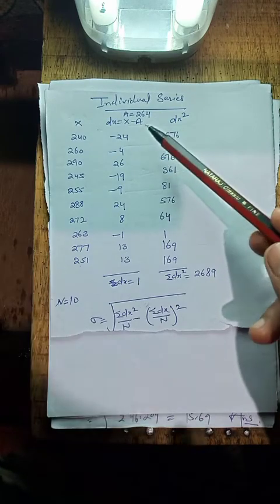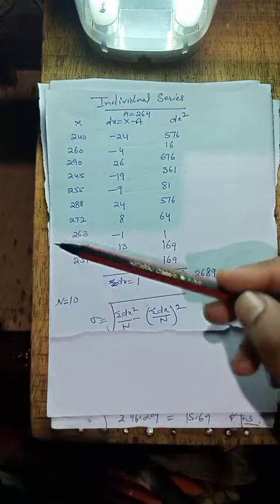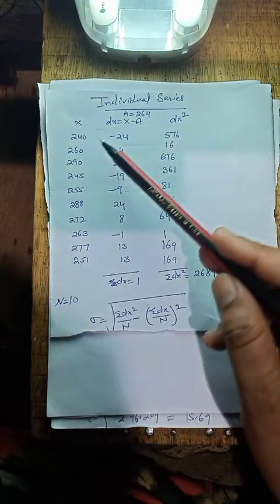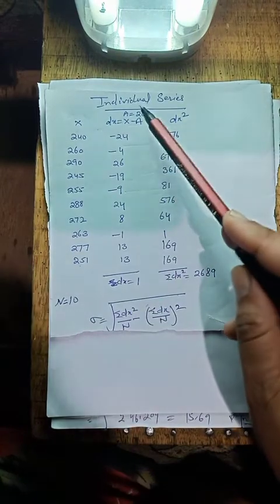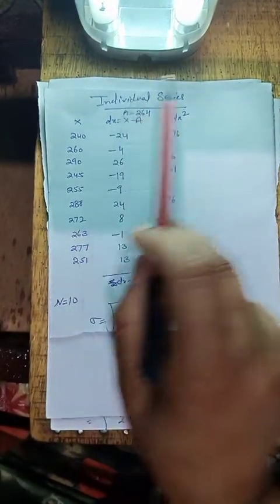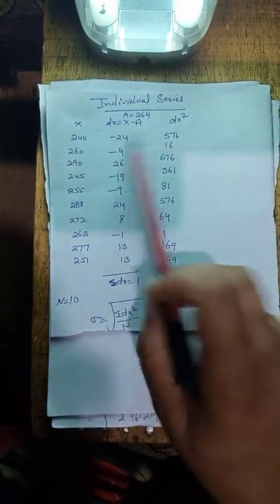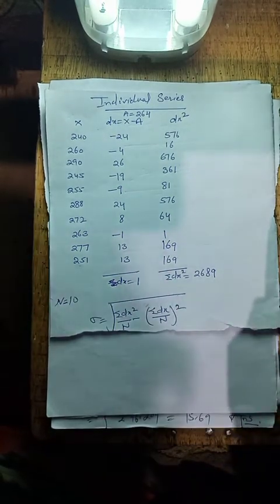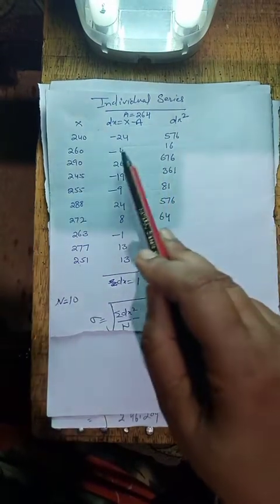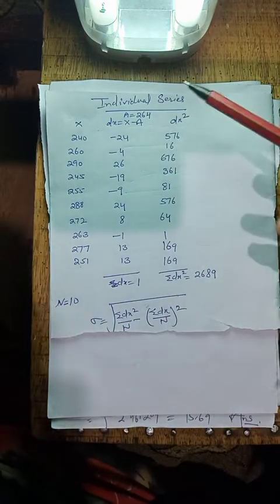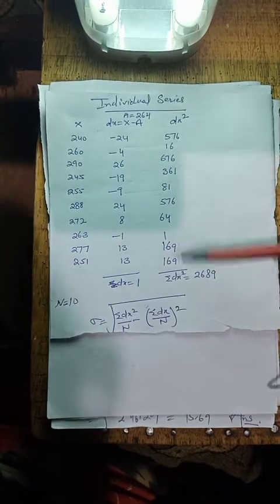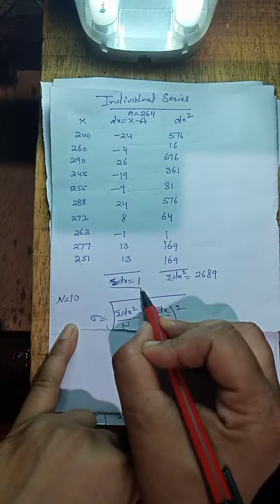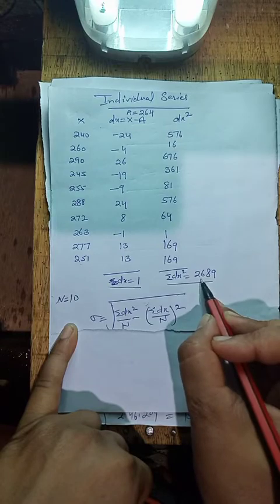A (adjusted value) can be any value — highest, lowest, or mid value. इस example में हमने 264 को adjusted value माना है। Given data में से 264 subtract करते हैं, और उसके बाद dx का square करते हैं। Squaring converts minus values to plus — for example, minus 24 into minus 24 gives plus 576, and minus 4 squared gives 16. अंत में dx को add करने पर summation dx = 1, और summation dx² = 2689 आता है।